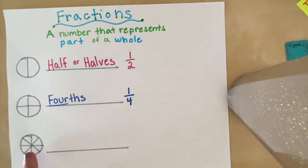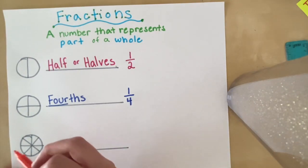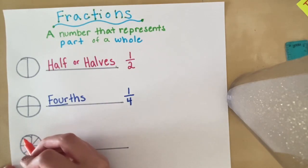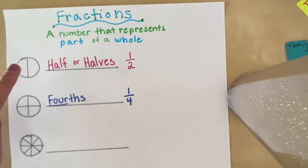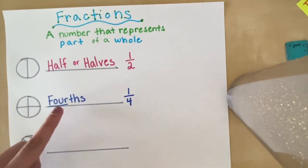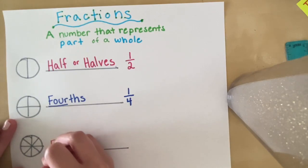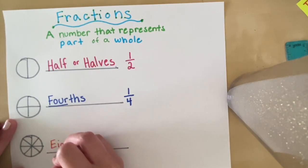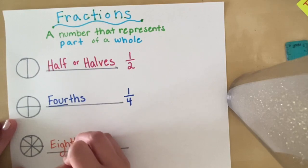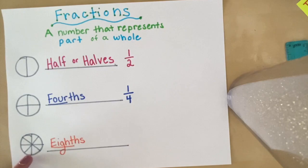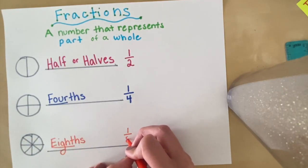Lastly, we have one more. This one has quite a bit more shapes to look at. Let's see how many equal parts this shape has: one, two, three, four, five, six, seven, eight. So if two of them are halves and four of them are fourths, how many do you think eight is? It's eighths! Why is it called eighths? Because there are eight equal parts in this whole. The number representation is going to be one over eight.